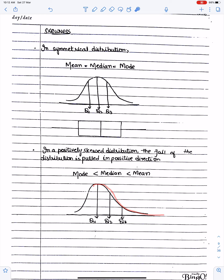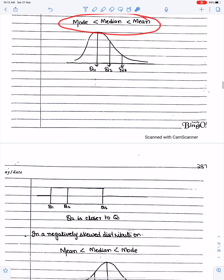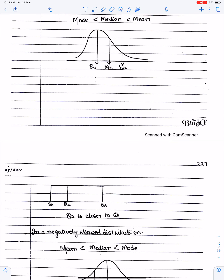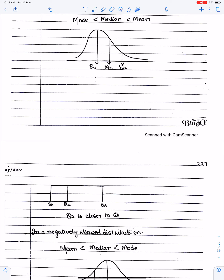In a positively skewed distribution, the tail of the distribution is pulled in the positive direction. To identify it from a box plot: if the median is close to Q1, the distribution is positively skewed. There are two identifying features — Q2 is closer to Q1, and there is a long stretching tail on the right side.